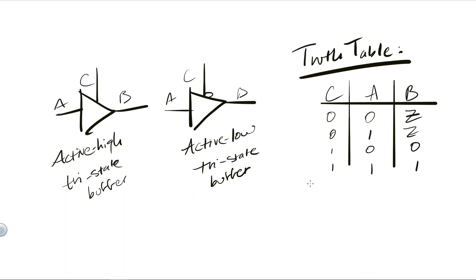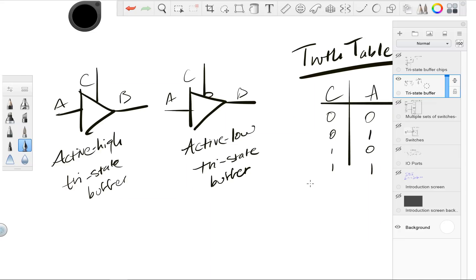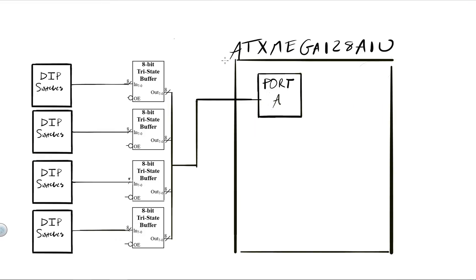In the context of our previous examples, we could connect multiple external entities together via one single bus with a series of tri-state buffers — one tri-state buffer per signal on that bus. Let's see how we'd do that for the four sets of DIP switches. Rather than connecting each 8-bit DIP switch package to an individual port, let's connect all four to a single port — Port A in this example — using 8-bit tri-state buffer components, where I abstract eight individual buffers into a single chip.